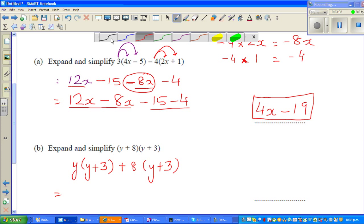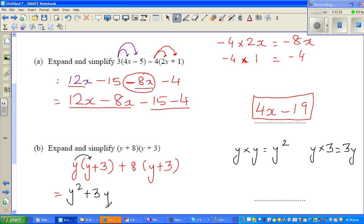Now you're expanding. y times y is y squared. Then you've got y times 3, which is 3y, so I'll write plus 3y. Then plus 8 times y is plus 8y, and plus 8 times plus 3 is plus 24. Now these two are the only like terms you can simplify.